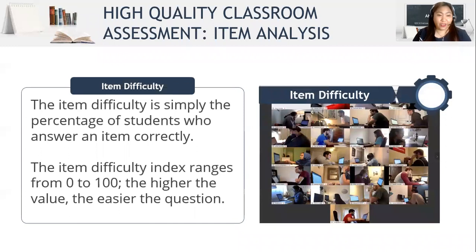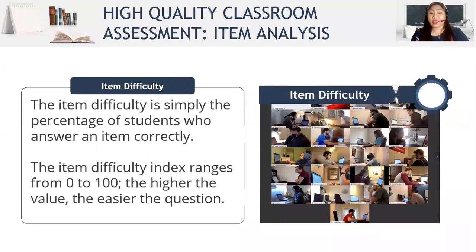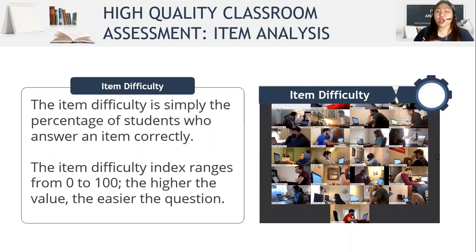Item difficulty is simply the percentage of students who answer an item correctly. The item difficulty index ranges from 0 to 100. The higher the value, the easier the question.